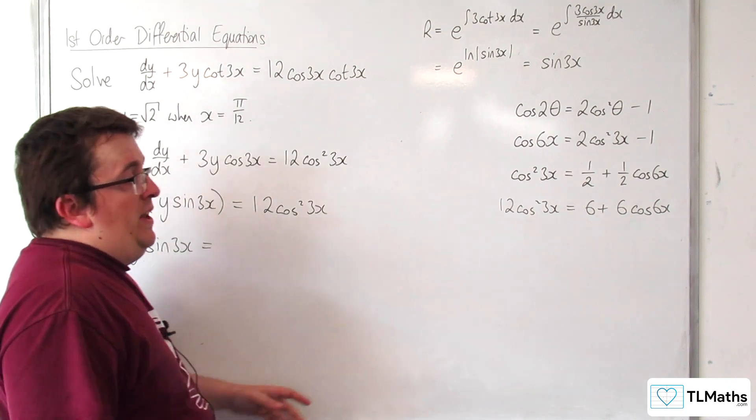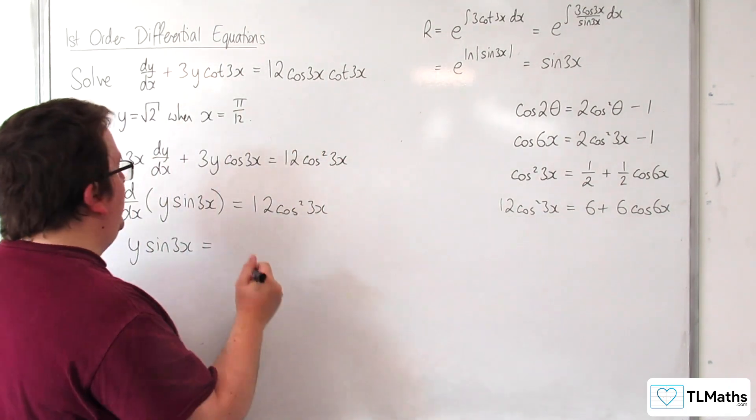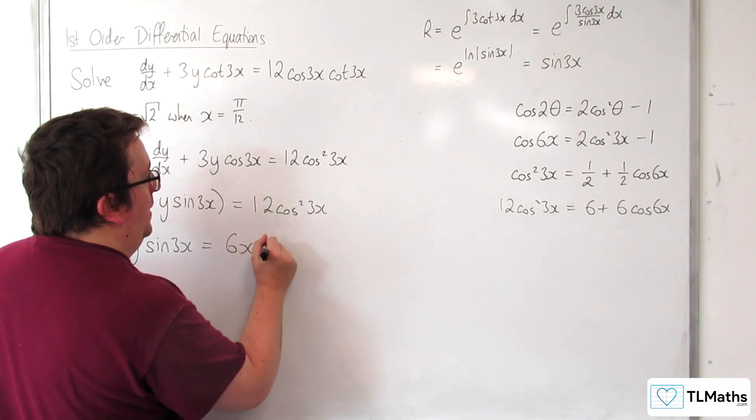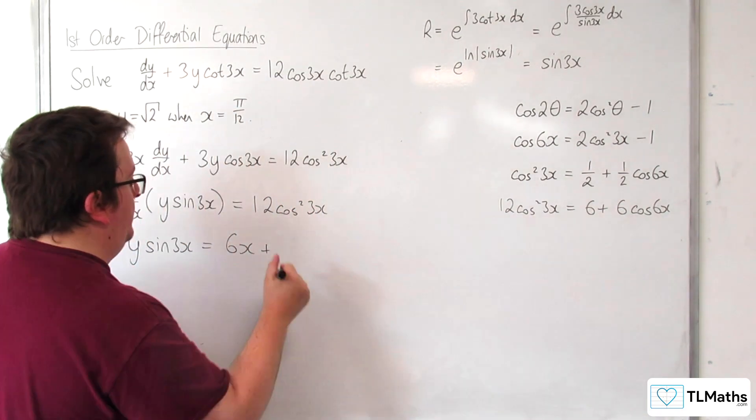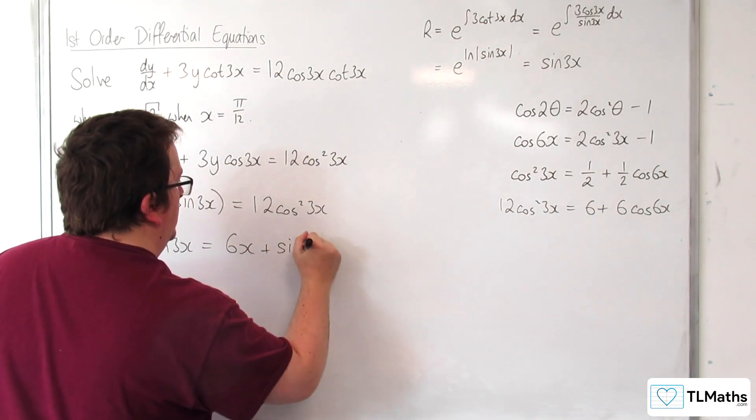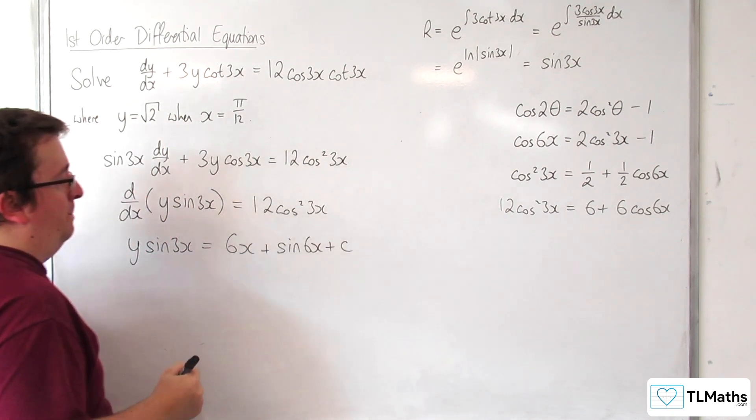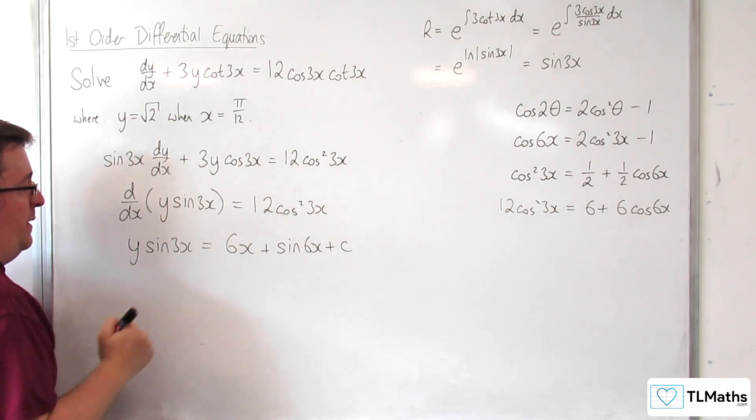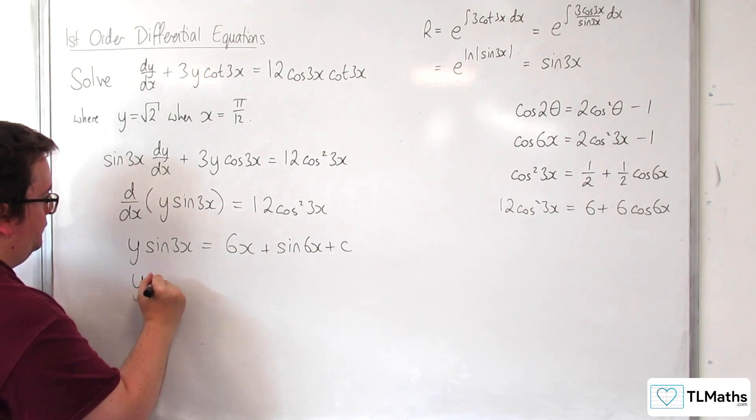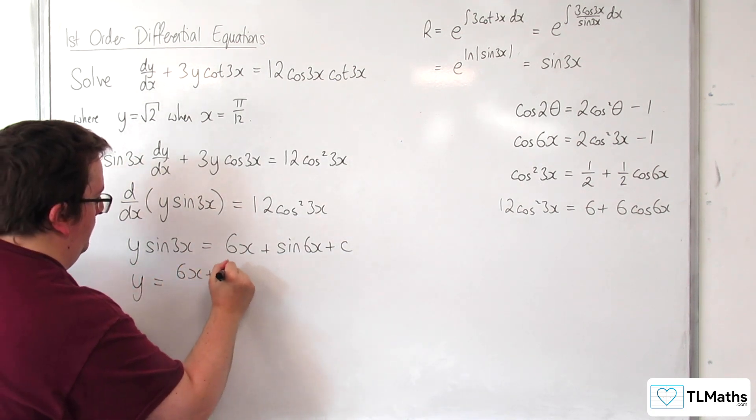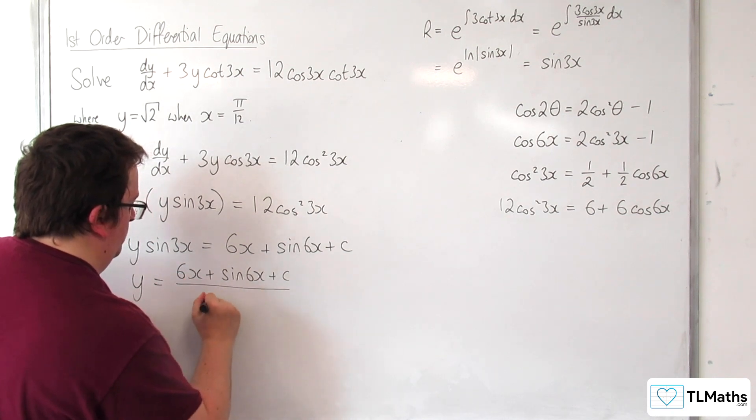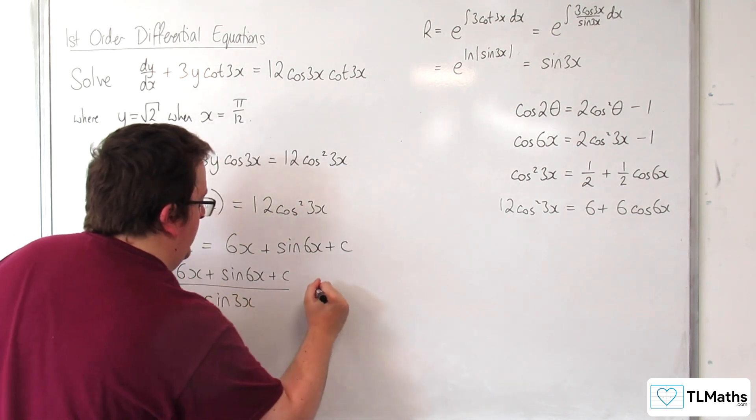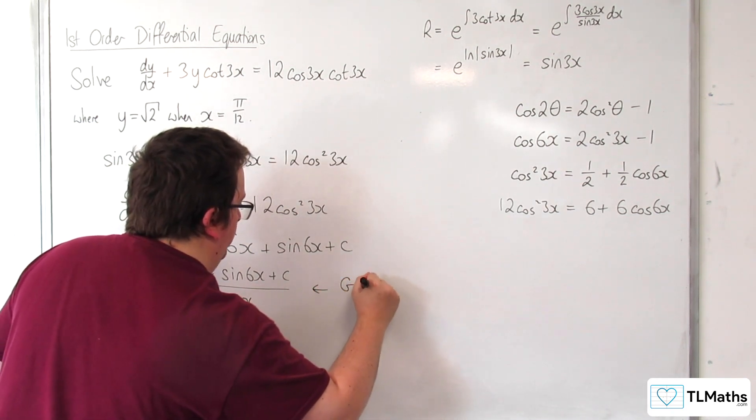We integrate this, we get 6x plus 6 cosine 6x, just integrates to sine of 6x, plus some constant c. Divide through by the sine of 3x. And this is our general solution.